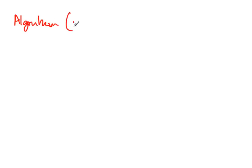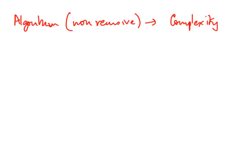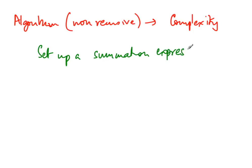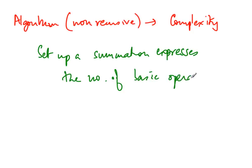With these four examples we have seen how to start with a non-recursive algorithm and determine its asymptotic complexity. The idea is to set up a summation expressing the number of basic operations and then solve that summation. This is one simple class of algorithms for which you can follow this recipe. In the next section, we will see how to do the same thing for recursive algorithms.